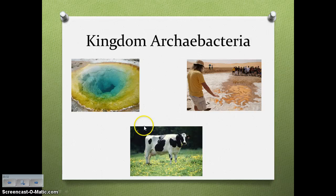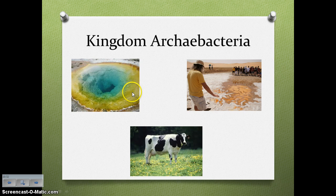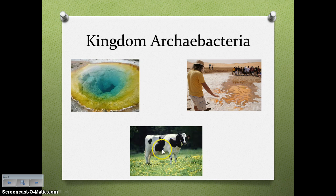Here are some pictures. Here is where you would find thermoacidophiles — in this hot spring. The white stuff here is salt, so this would be where halophiles live. And in the cow's intestines, you would find methanogens producing methane.